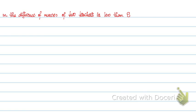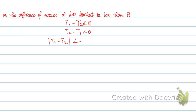The last part for this question is: the difference of masses of 2 teachers is less than 8. We have 2 teachers and the difference needs to be less than 8. The difference could be T1 minus T2 less than 8, or T2 minus T1 less than 8. We do not know which teacher is heavier, so this becomes the modulus of T1 minus T2 less than 8, since the difference needs to be a positive 8.